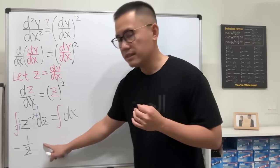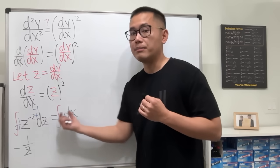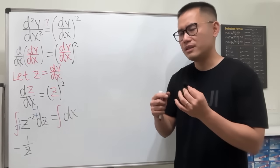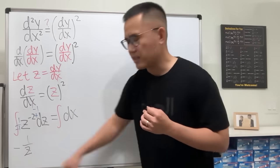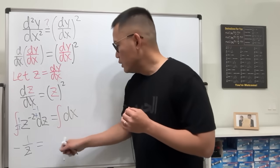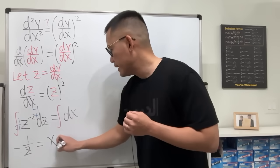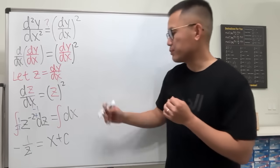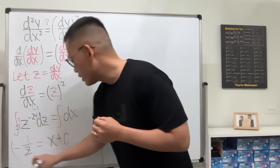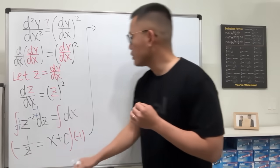We add a constant on the right side — since a constant minus another constant is still a constant, we keep it on the right. So negative 1/z equals x plus c. Then multiplying both sides by negative 1 gives 1/z equals negative x plus c.